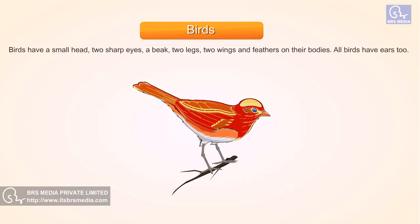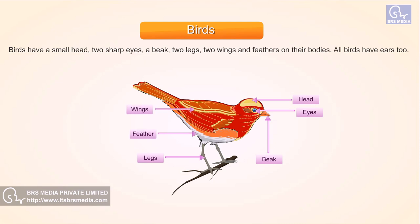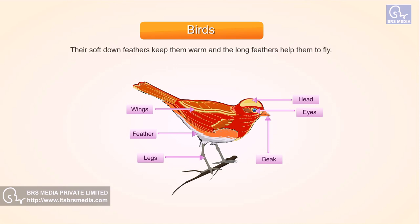Birds. They have two legs, two wings, and feathers on their bodies. Their soft down feathers keep them warm, and the long feathers help them to fly.